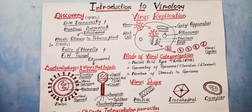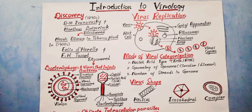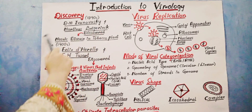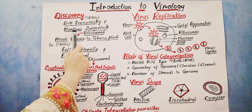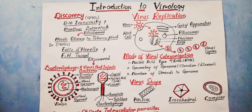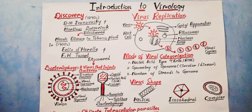Before the discovery of viruses, the whole world and scientists were only aware that there is a pathogenic agent which causes harmful or infectious diseases, and that agent is bacteria. But in the 1890s, two scientists — D.M. Ivanowski and Martinus Beijerinck — discovered an unusual infectious agent that causes infection in tobacco plants.